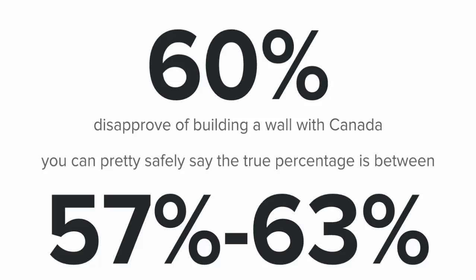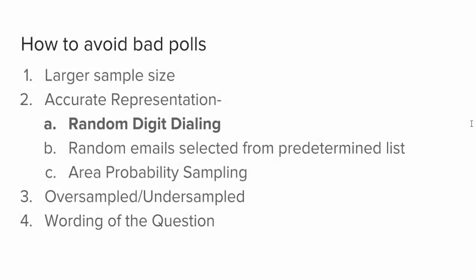If I ask people about building a wall with Canada over and over again, including actually putting the question on the ballot, I would be consistently in that range and probably should not start calling construction companies. Keeping in mind sampling error, you are going to have to avoid bad polls. Number one is looking at the sampling size and the sampling error.